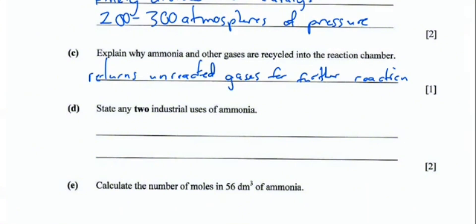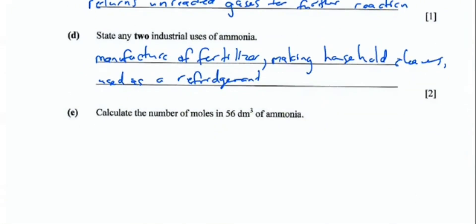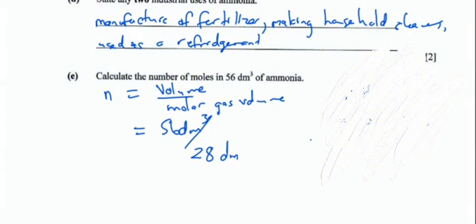State any two industrial uses of ammonia. The most obvious one is manufacture of fertilizer. Another one is making detergents or making household cleaners like those detergents which contain ammonia, especially for use in the toilet. Purification of water, or used as a refrigerant. Calculate the number of moles in 56 dm³ of ammonia. The number of moles is equal to volume over molar gas volume. We divide the volume which we've been given, 56 dm³, divided by the molar gas volume which is 28 dm³ per mole. That gives us two moles.